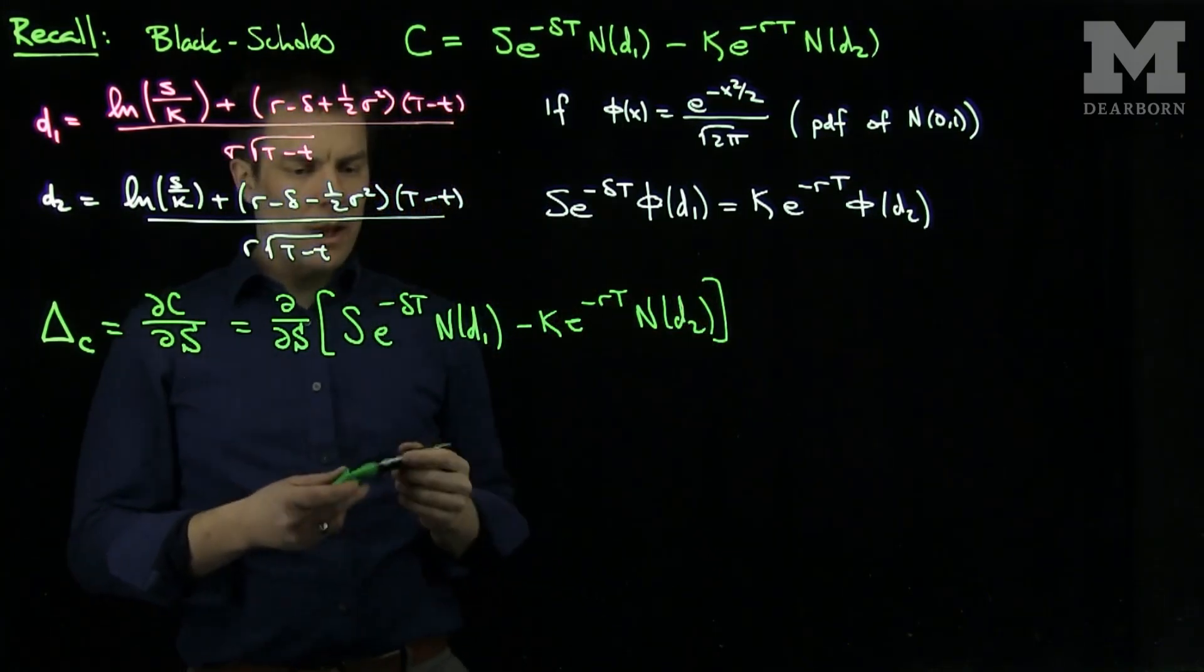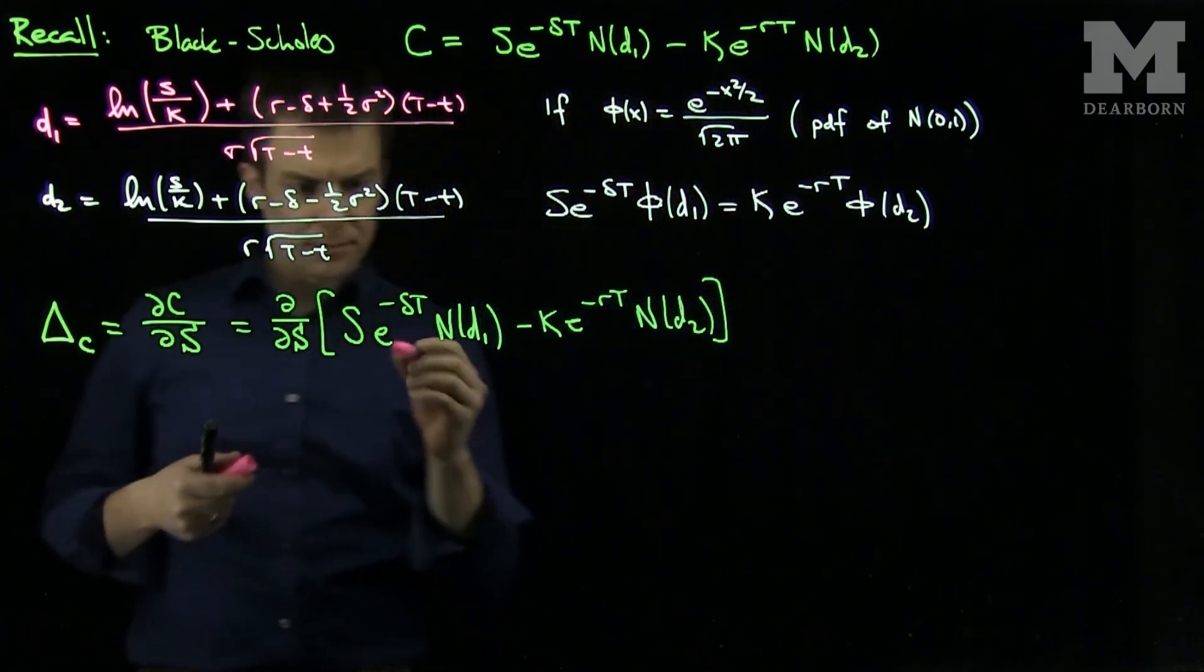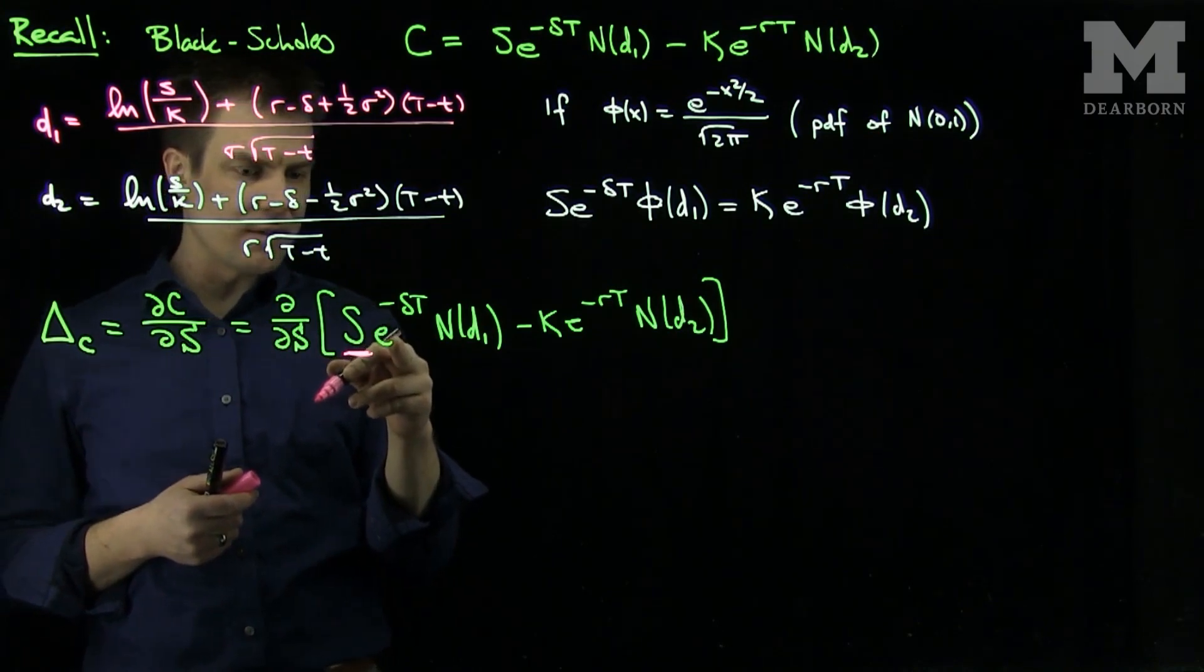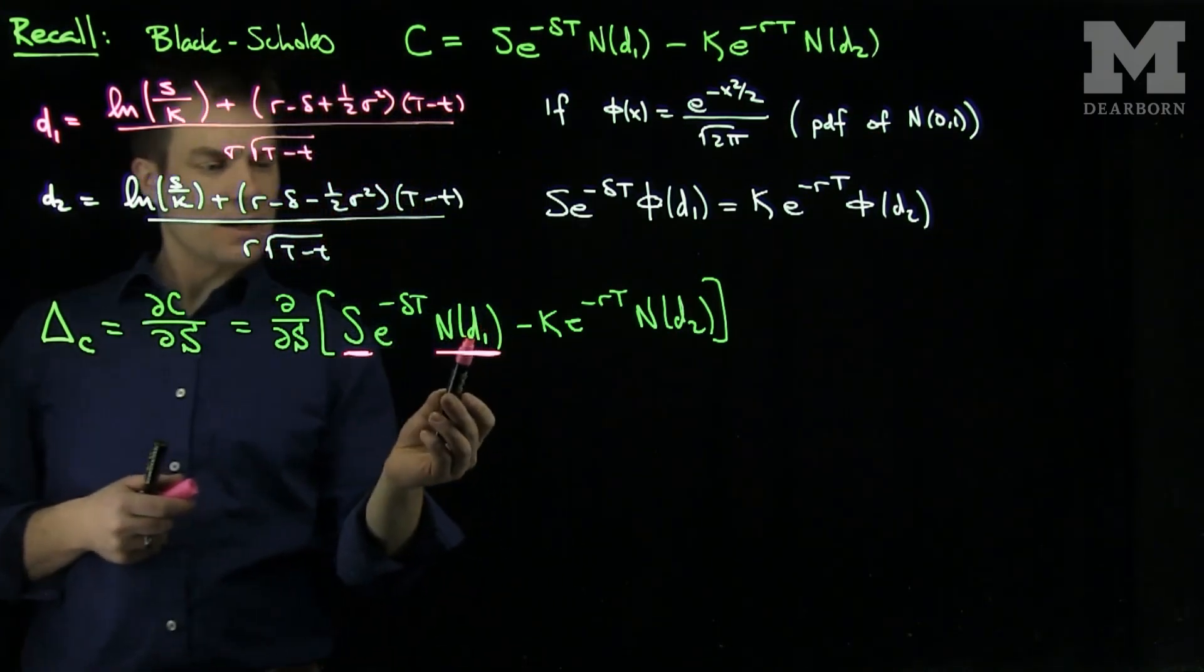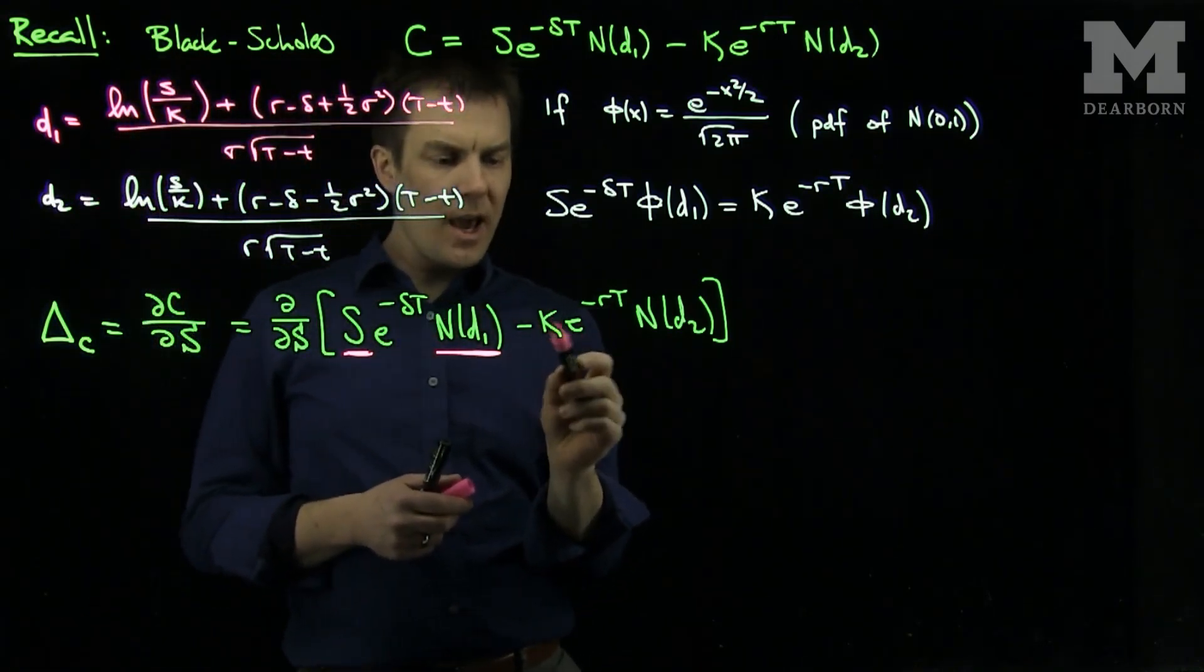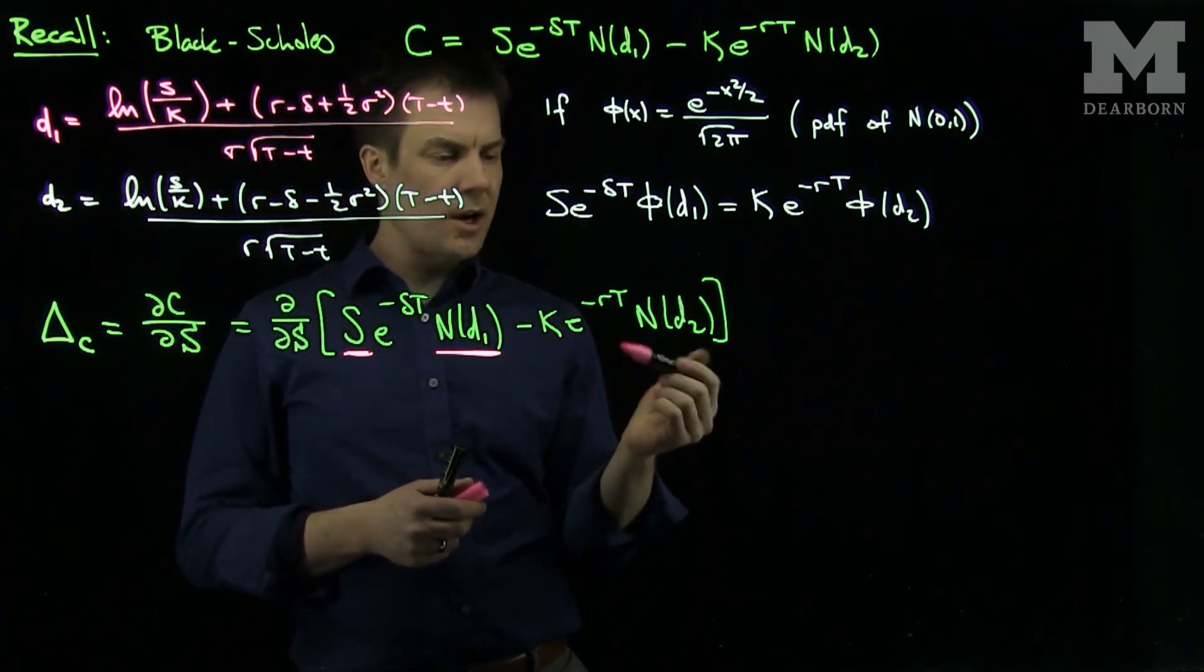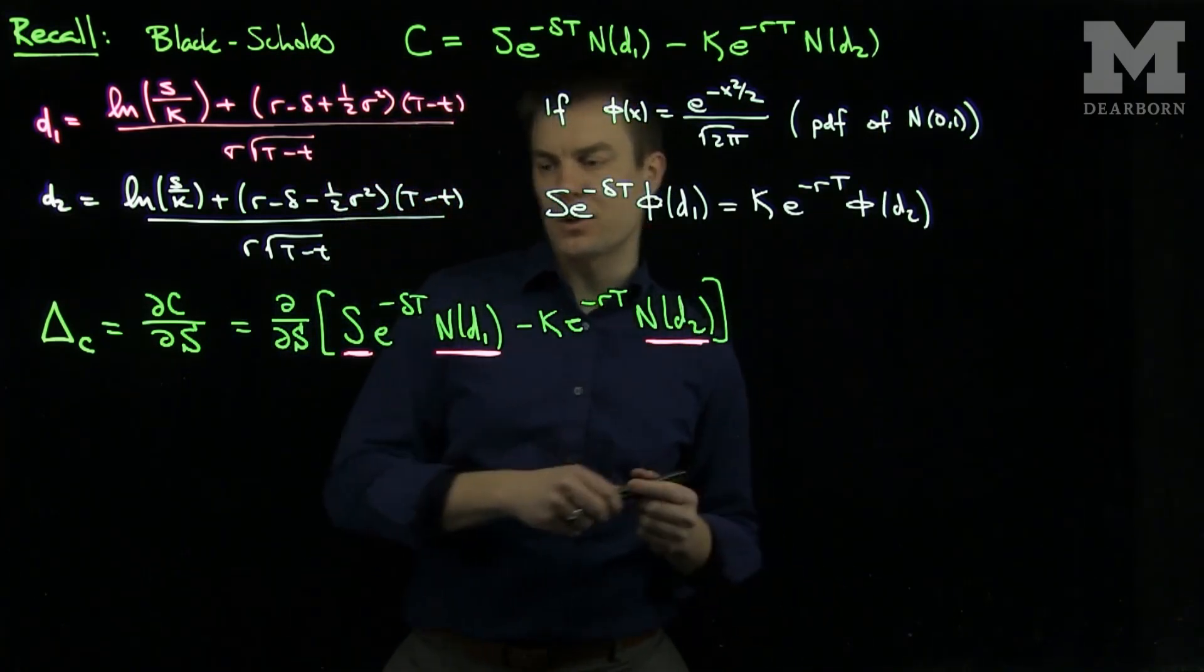And so now we see that let's underline the terms that depend on s. So over here, this clearly depends on s. This e to the negative delta t does not. This n of d1 depends on s because d1 has an s in it. And then we have a k e to the minus rt, there's no s's there, but I have an n of d2. So those three terms are the terms that depend on s and those are the terms that need to be differentiated.